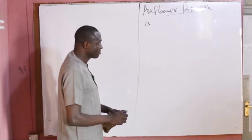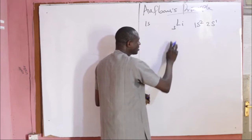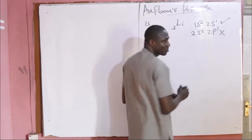For instance, if you want to write the electronic configuration of the lithium atom, you are expected to start from 1s2, then proceed to 2s1. It is wrong to start the electronic configuration by writing 2s2, 2p1. The correct approach, in accordance with the Aufbau principle, is to start from the lowest energy level.